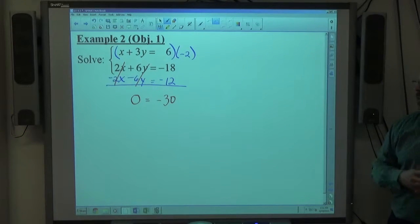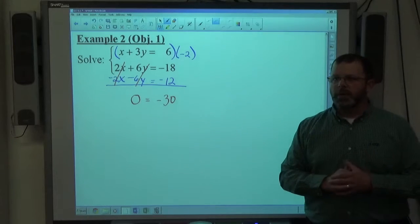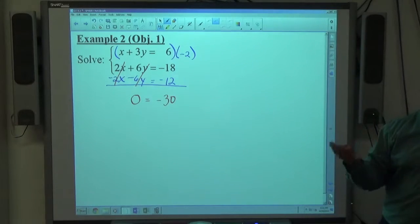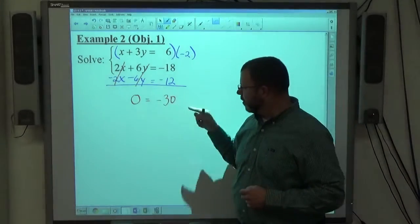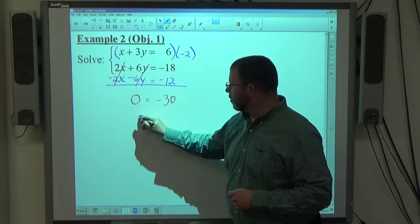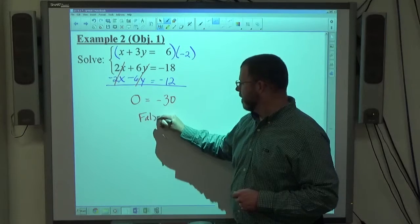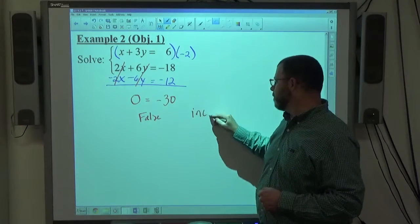Now, when both of the variables cancel like that, when you're trying to eliminate one but both of them go away, that's called either an inconsistent or a dependent equation. It depends on the truth or falseness of this. This, of course, is false. That makes it an inconsistent system of equations.